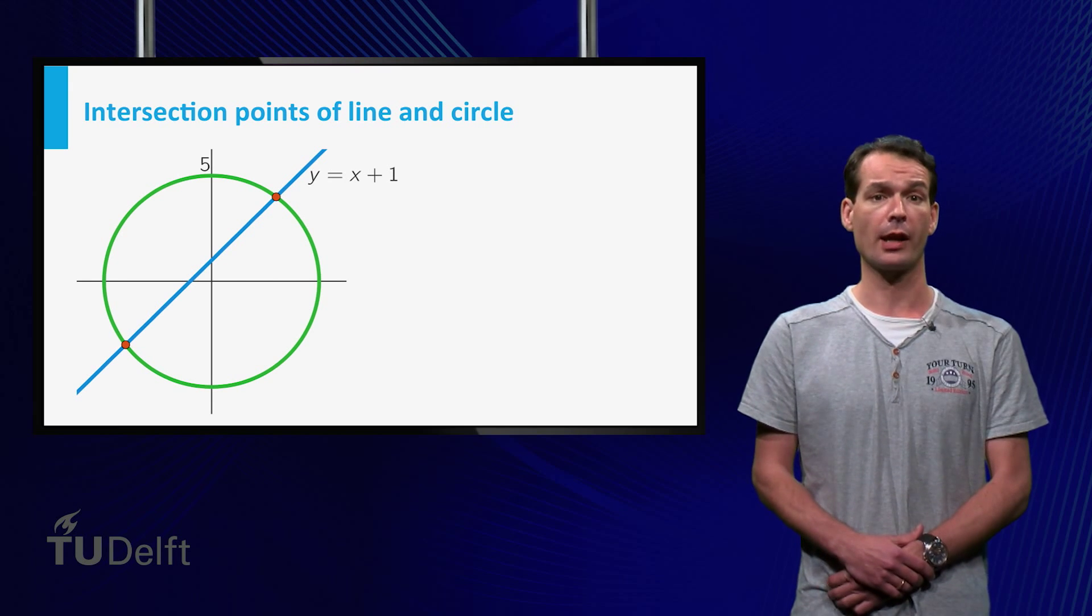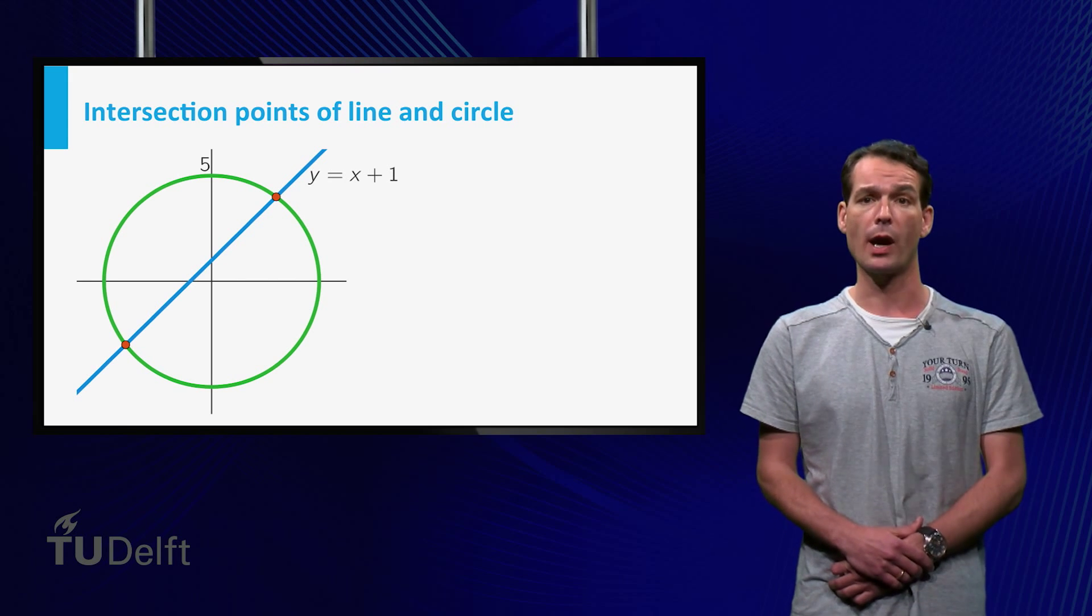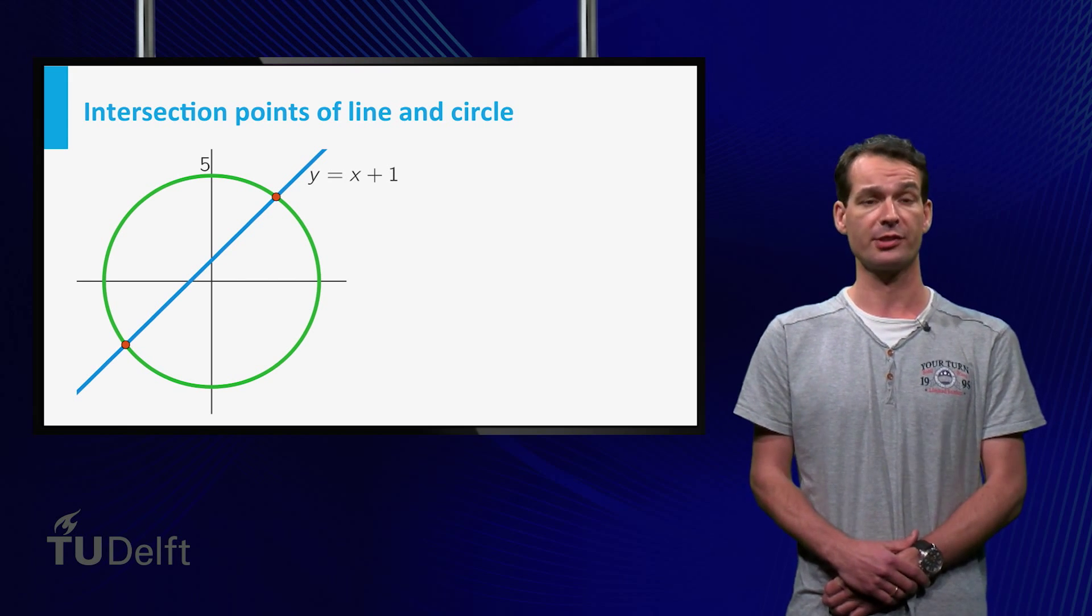Let's consider the following example. We want to calculate the points of intersection of the line given by y equals x plus 1 and the circle with radius 5 whose center is at the origin.